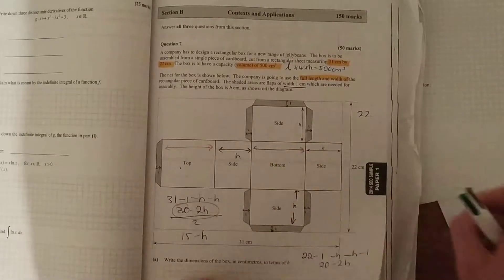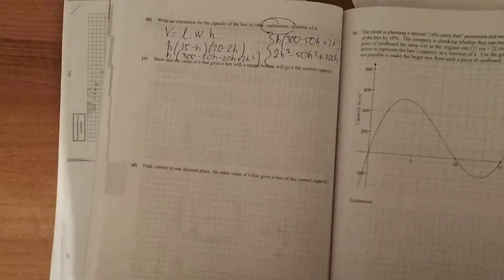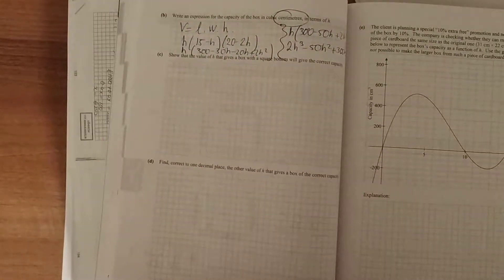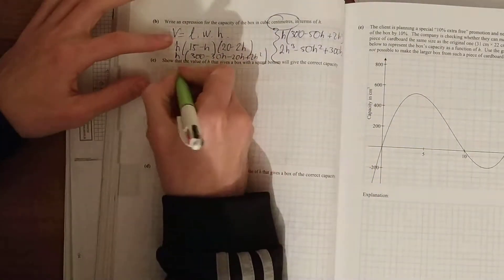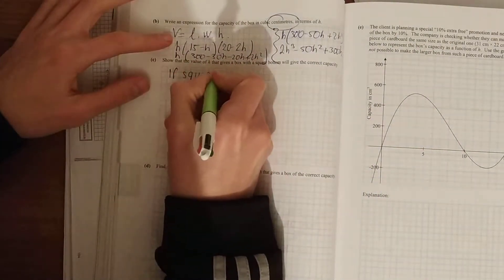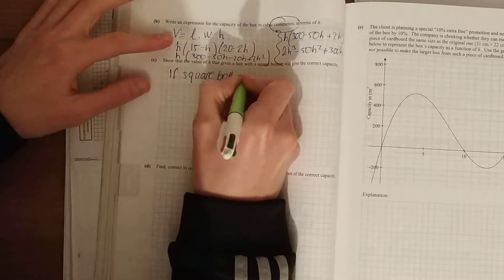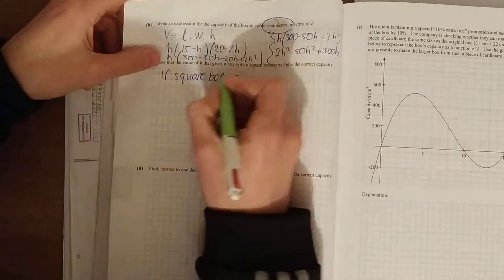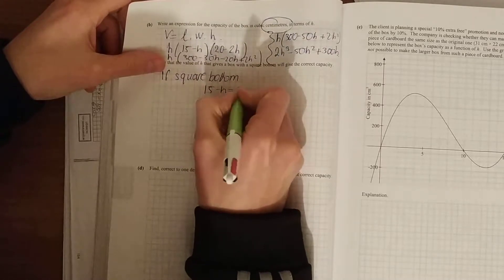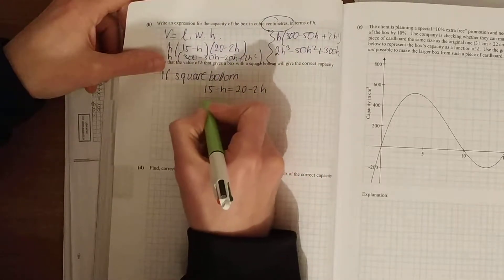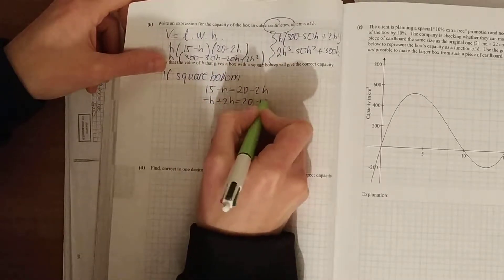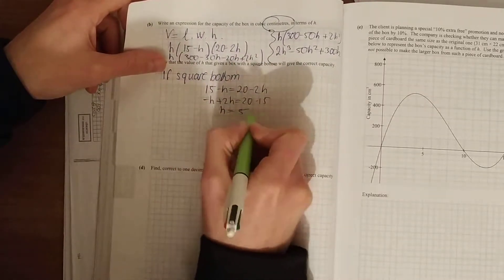So we must find our values of h that make our length and our width equal. So if it's a square bottom, your 15 minus h is equal to your 20 minus 2h. So solve for h first of all. Minus h plus 2h is equal to 20 minus 15, h is equal to 5.